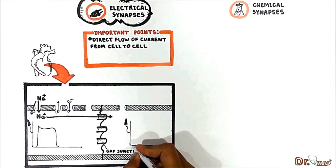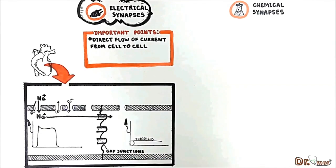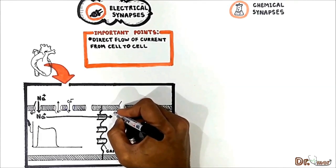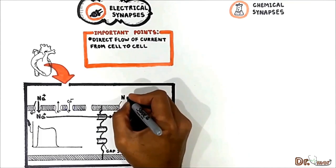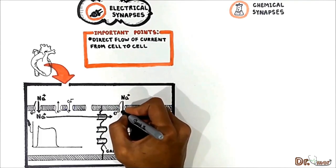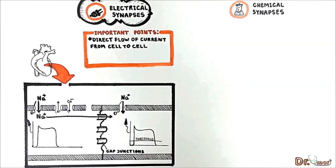The current flow depolarizes the second cell up to the threshold. As a consequence the voltage-gated sodium channels open up and we get a massive sodium influx that depolarizes the second cell generating an action potential.